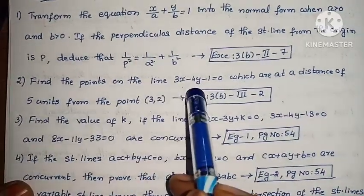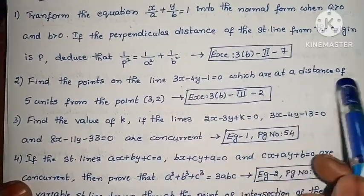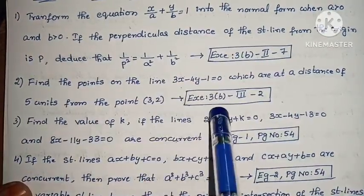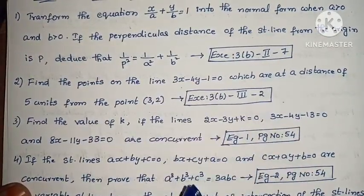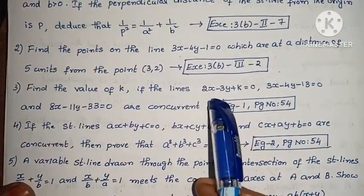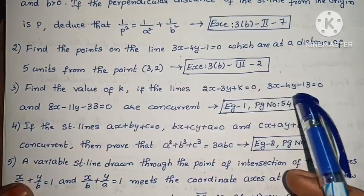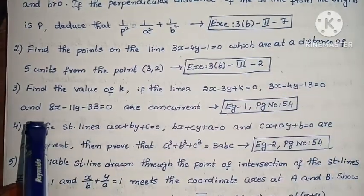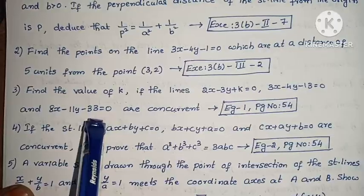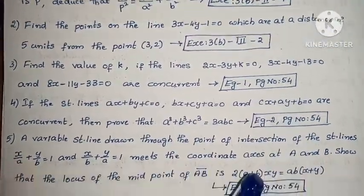Next, find the points on the line 3x minus 4y minus 1 equals to 0 which are at a distance of 5 units from the point (3, 2). Next, find the value of k if the lines 3x minus 3y plus k equals to 0, 3x minus 4y minus 13 equals to 0 and 8x minus 11y minus 33 equals to 0 are concurrent. Example 1, page number 54.